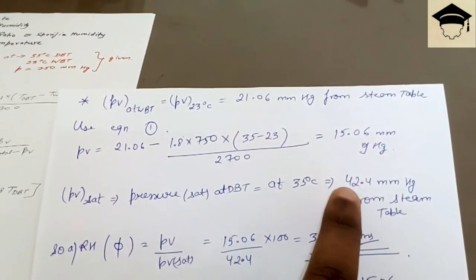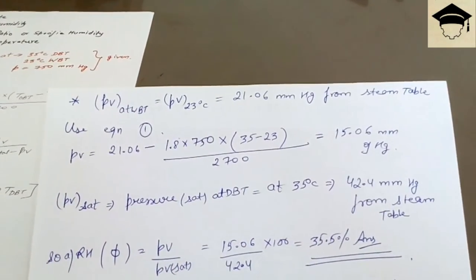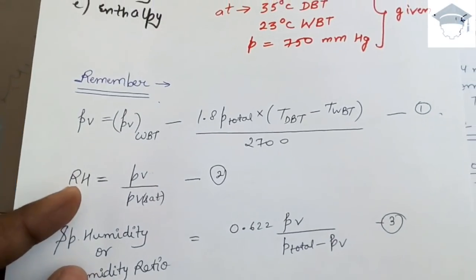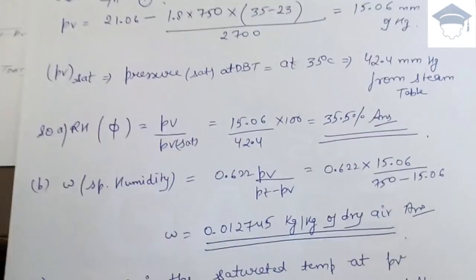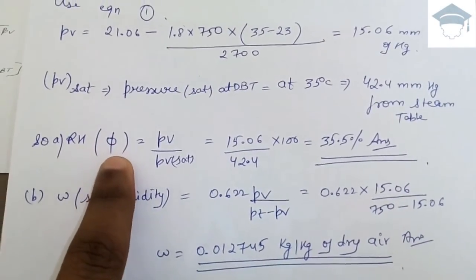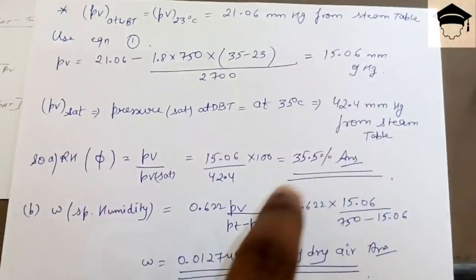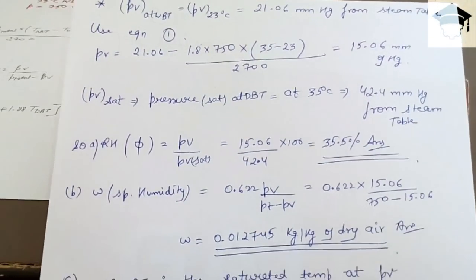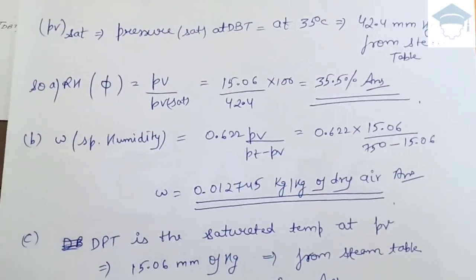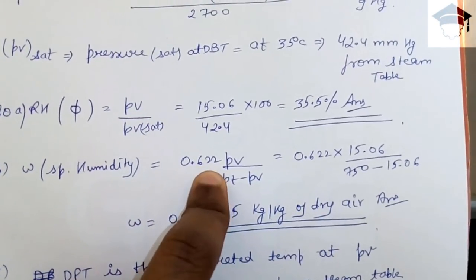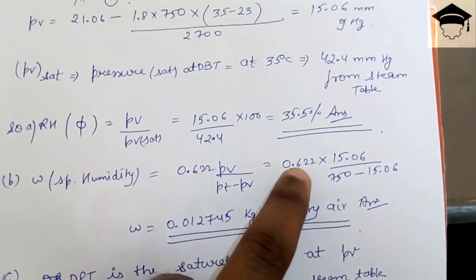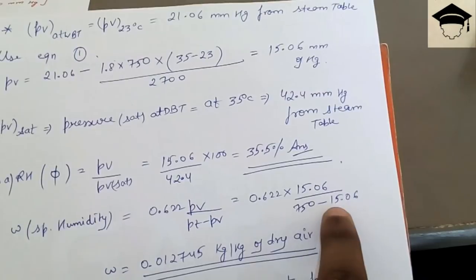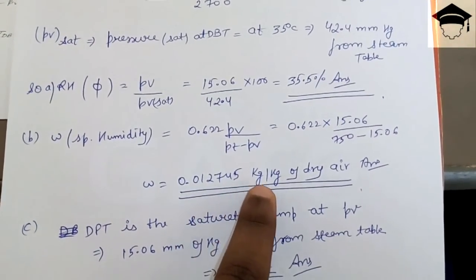Now using relation 2: relative humidity φ = pv / pv_saturation = 15.06 / 42.4 × 100 = 35.5%. For specific humidity: w = 0.622 × pv / (P_total − pv) = 0.622 × 15.06 / (750 − 15.06) = 0.012745 kg/kg of dry air. Remember to include the unit 'kg per kg of dry air' or you will lose marks.